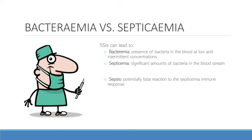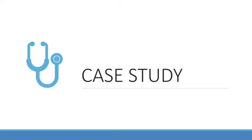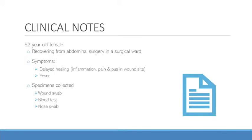Today our case study involved a surgical site infection, and we will be discussing how we go about identifying the causative organism and treating the infection. We have a 52-year-old female patient who was in the surgical ward recovering from an abdominal surgery. We can assume that the surgical site was inflamed and had pus, evidence that the patient was experiencing an infection. The following specimens were collected: blood culture, wound swab, and a nose swab.